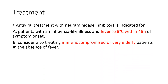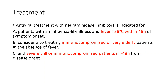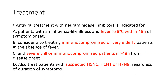Immunosuppressed or very elderly patients in the absence of fever may be considered for treatment. Severely ill or immunosuppressed individuals may be treated even if it is more than 48 hours from disease onset. Any patient suspected to have pandemic influenza — H5N1, H1N1, or H7N9 — can receive neuraminidase inhibitors whatever the duration of symptoms.